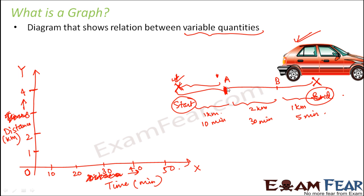So what do you see? Initially, the car travels. When it reaches point A, it travels 1 kilometer in 10 minutes. So 1 kilometer is here and 10 minutes is here. So basically, this point.